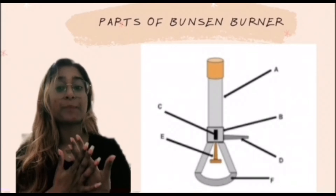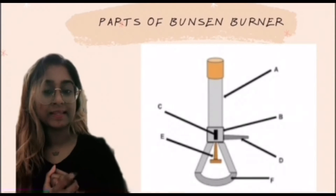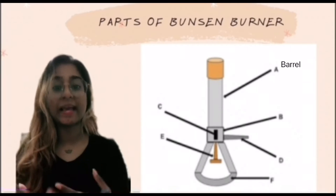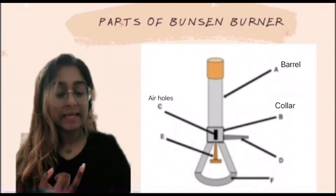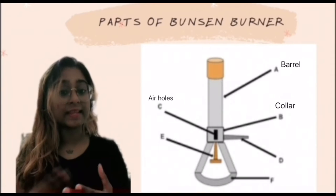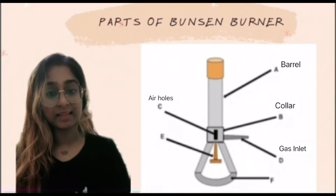Part A is known as a barrel. It is 5 inches long to raise flame to a suitable height for burning. Part B and C is collar with air holes. It helps regulate the amount of air that enters the burner. Part D is known as the gas inlet whereby natural gas enters from gas tap.